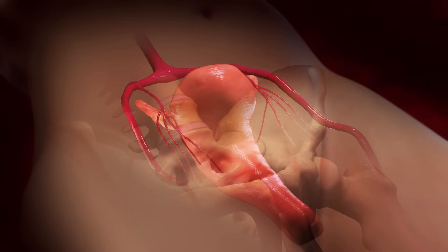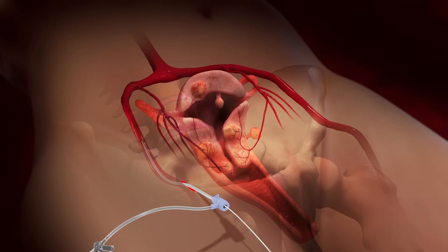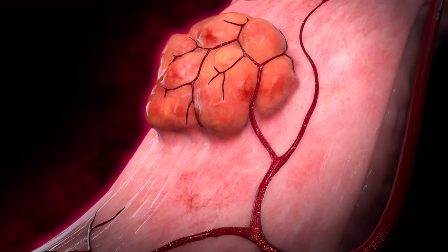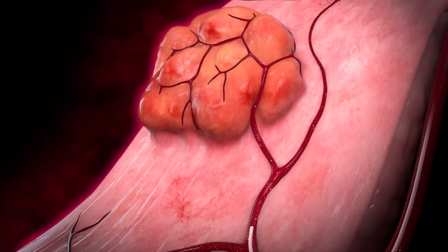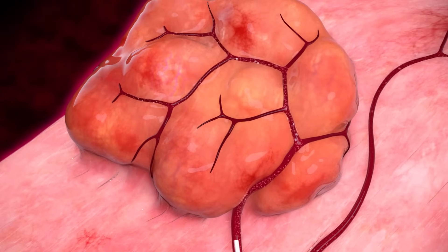Uterine fibroid embolization is a minimally invasive procedure. UFE does not remove the uterus or the ovaries. A small incision is made in the leg to gain access to the femoral artery. A long, flexible tube called a catheter is then inserted into the femoral artery. It is guided up the femoral artery and into the artery that supplies blood to the uterus, called the uterine artery. The catheter is then guided to smaller arteries that supply blood to the fibroids. UFE delivers tiny microspheres to the artery that supplies the fibroids, cutting off the blood flow, causing the fibroids to shrink.